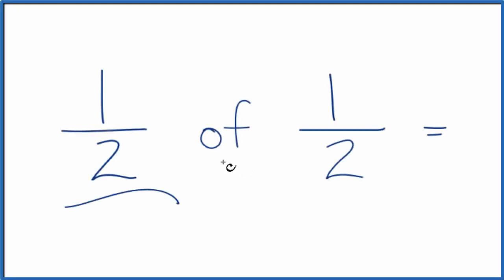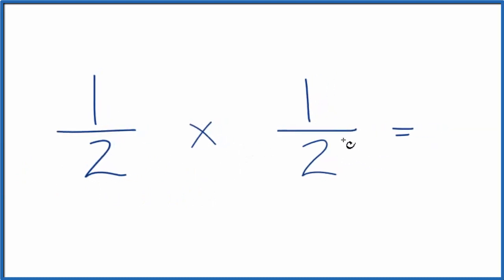Let's find one half of one half. How do you find one half of one half? The trick is to think of the 'of' as a multiplication. So we take one half times one half.